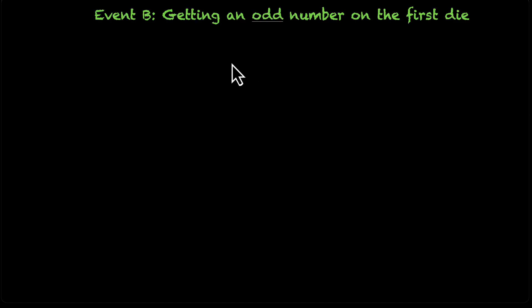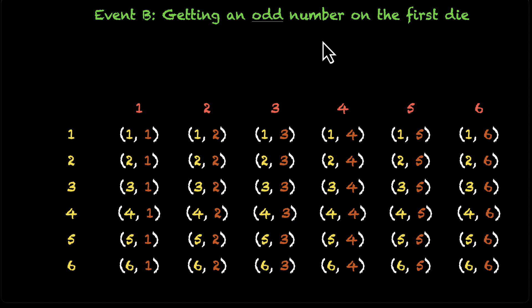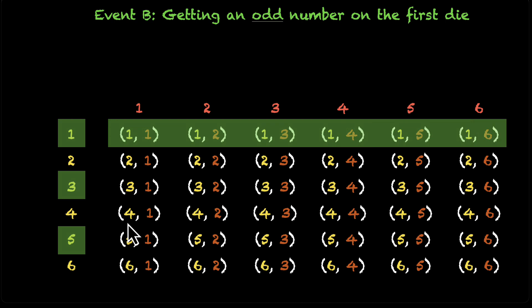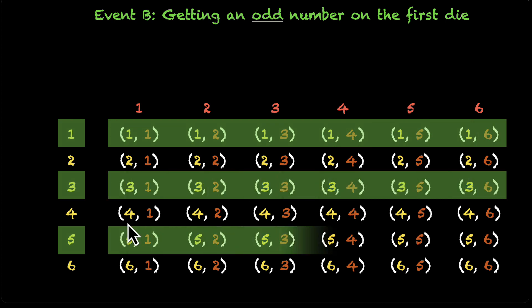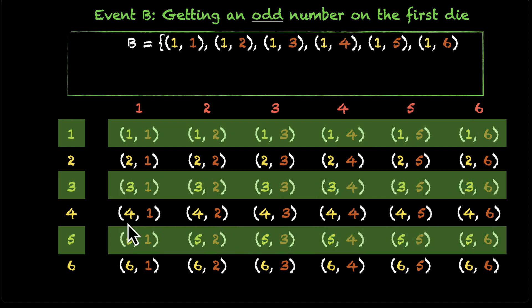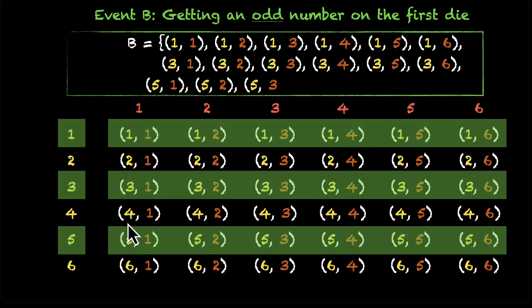Similarly, event B is getting an odd number on the first die. Two, four, and six were even, so one, three, and five are odd. The rows for die-one showing one, three, and five make up event B.